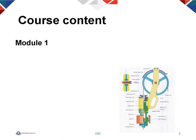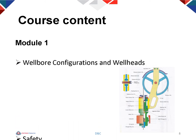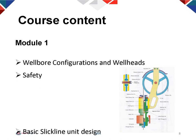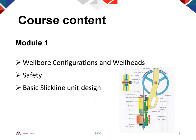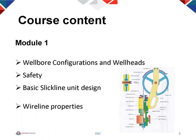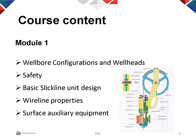The course content is divided into five modules. In the first module, we'll discuss well bore configurations and well heads, safety, basic slick line unit design including open loop and closed loop hydraulic systems, wire line properties such as solid single strand, braided line and wire line terminations. We'll also discuss surface auxiliary equipment such as the counter wheel, the weight indicator and the pressure control equipment.